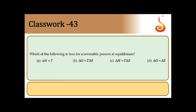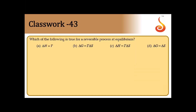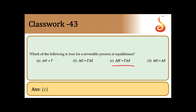Question 43: Which of the following is true for a reversible process at equilibrium? At equilibrium, ΔG = 0. Using ΔG = ΔH − TΔS: when ΔG = 0, ΔH = TΔS. Answer is option C.